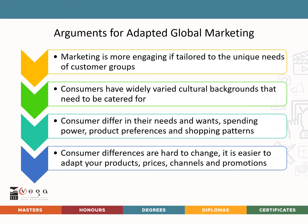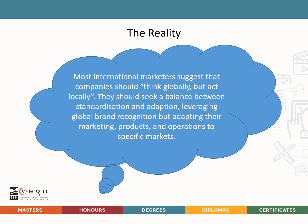Despite global convergence, consumers in different countries still have widely varied cultural backgrounds and differ significantly in their needs, wants, spending power, product preferences, and shopping patterns. Because these differences are so hard to change, most marketers today adapt their products, prices, channels, and promotions to fit each country. However, global standardization is not an all-or-nothing position — it's a matter of degree. Most international marketers suggest a company should think globally but act locally, seeking a balance between standardization and adaptation by leveraging global brand recognition while adapting marketing, products, and operations to the specific market.